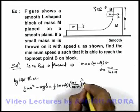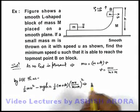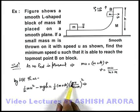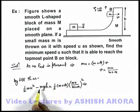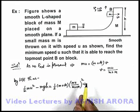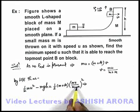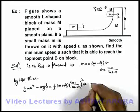And simply on solving this expression we'll get it. Here you can take this half m u square common, and you can take this term on the left side of equality and m g h on the other side, and one m plus small m will get cancelled out.